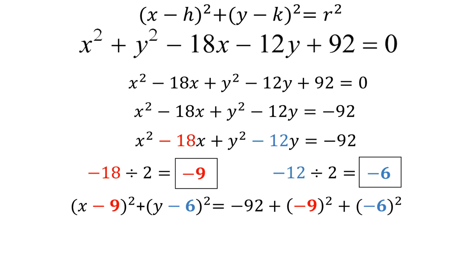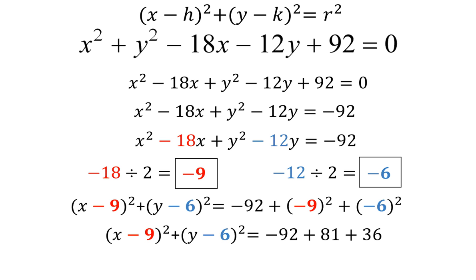All I'm going to do is simplify the right-hand side. Negative 92, plus negative 9 squared which is positive 81, plus negative 6 squared which is positive 36. I add those and get my equation of the circle. From here you should be able to identify the center and the radius. If this is confusing, maybe watch it a second time — I am always here to help you.